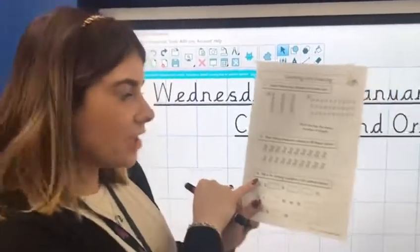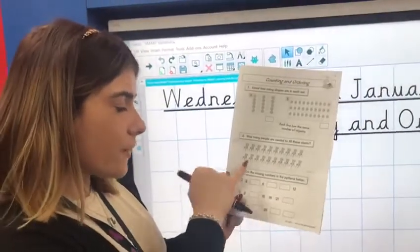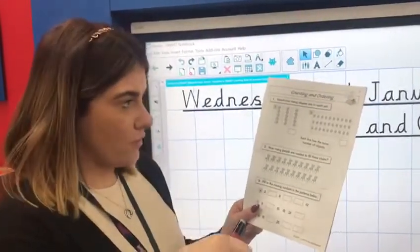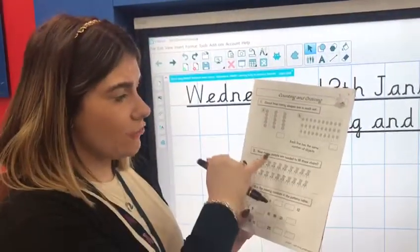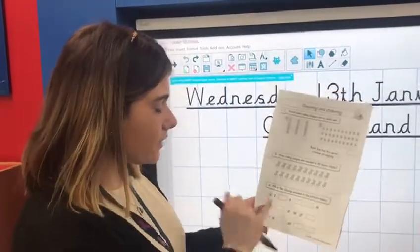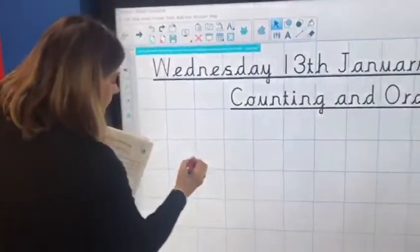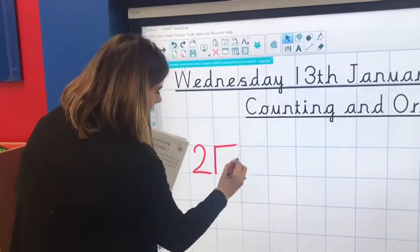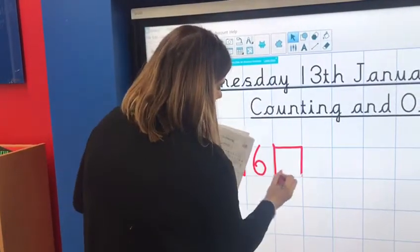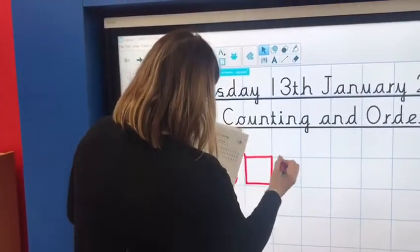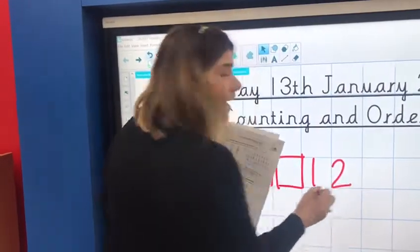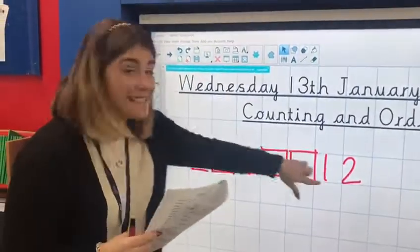Now when we get to question 3, it gets a little bit trickier. It asks us to fill in the missing numbers in the patterns below. We know we're not counting in 1s because the rest of the page we've been counting in groups of 2s, 5s, and 10s. So let's have a look at question A. It starts with 2, and then there is a missing number. Okay, now we've got a 6 and a missing number, and another missing number, and then 12. You might have already noticed what this pattern is counting in.